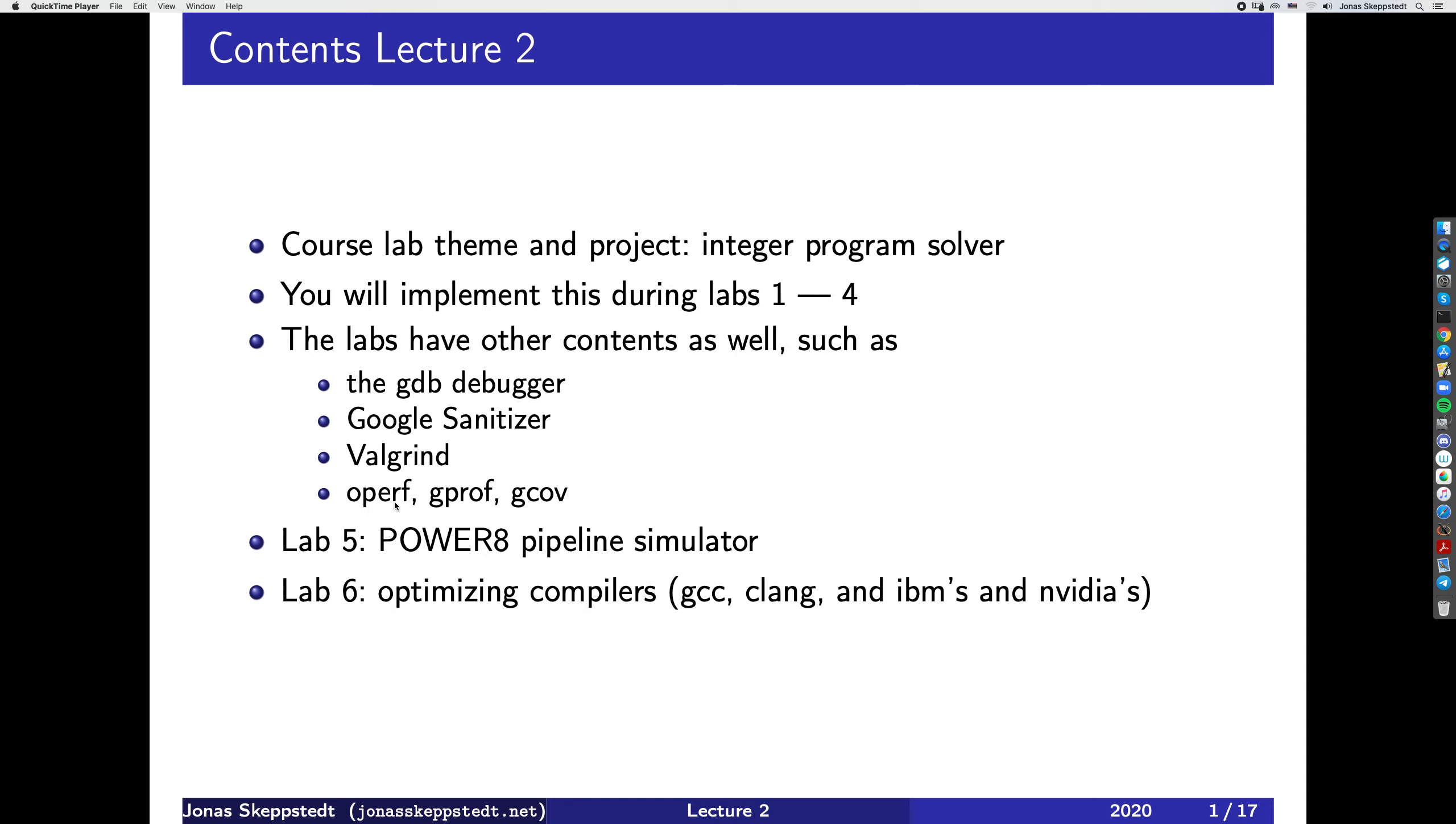Perf is a program or system which samples what happens in the CPU using special registers to count how many clock cycles have occurred, how many different things have occurred, and then present that information. This is extremely useful.